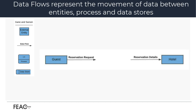Next, let's examine the data flows. Data flows represent the movement of data between external entities, processes, and/or data stores, and are represented with a solid line with an arrow representing the direction of flow. Data flows must be labeled and make explicit the types of data that is being flowed. Data labels must be nouns.